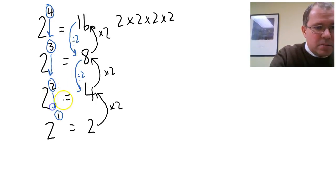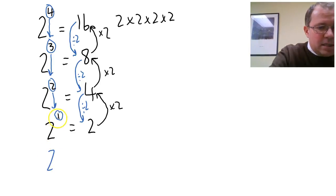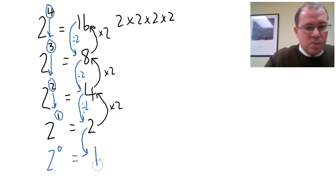As this decreases by 1, this divides by 2. And that's how we're going to get at what 2 to the power of 0 is. Let's decrease the 1 by 1 and follow the pattern. 2 divided by 2 is 1, and we can keep going.